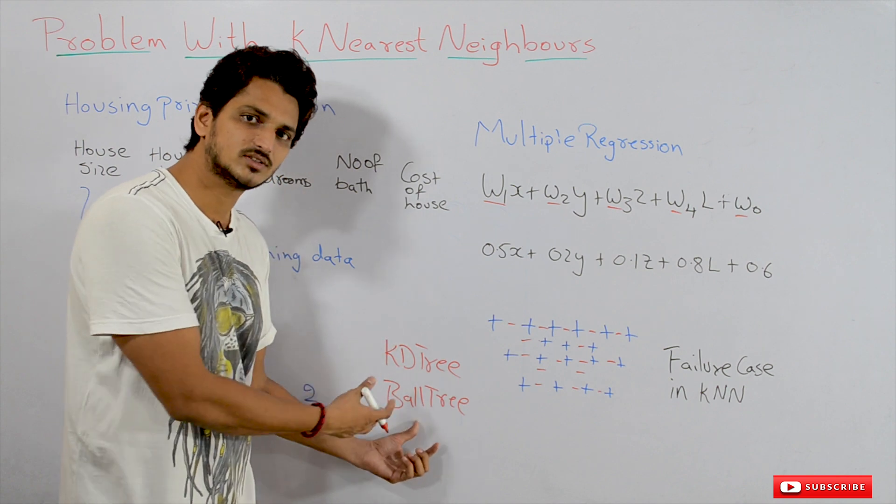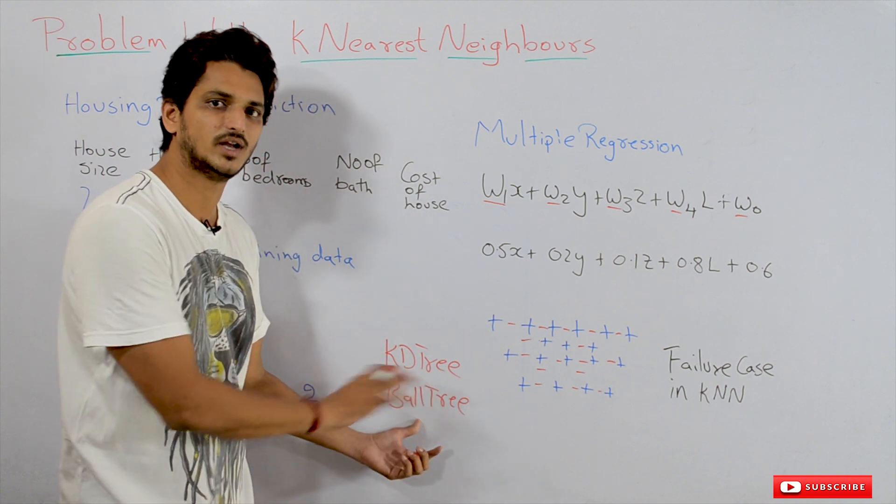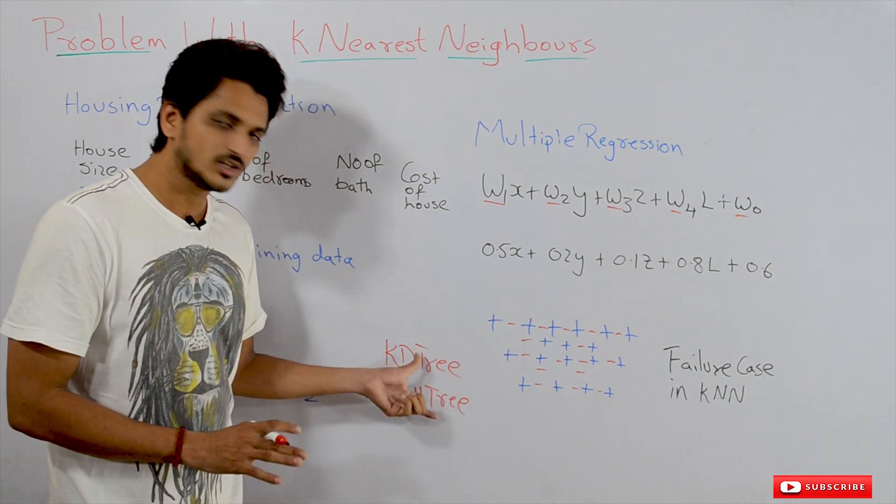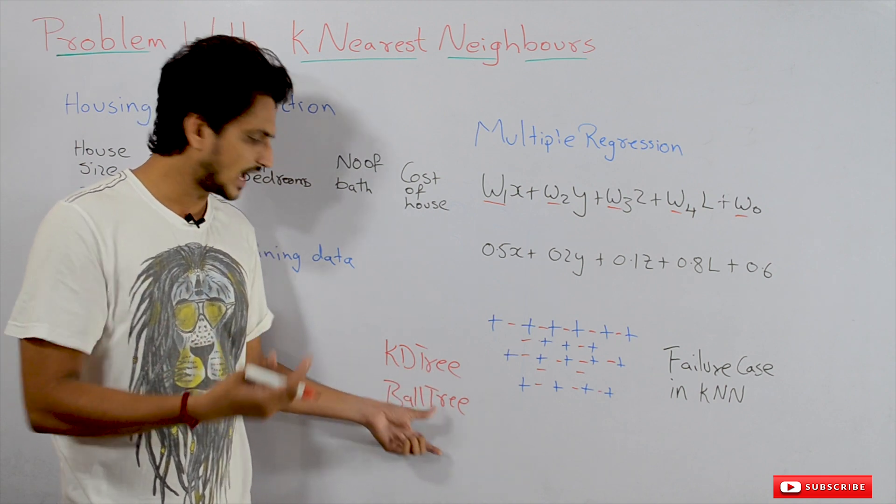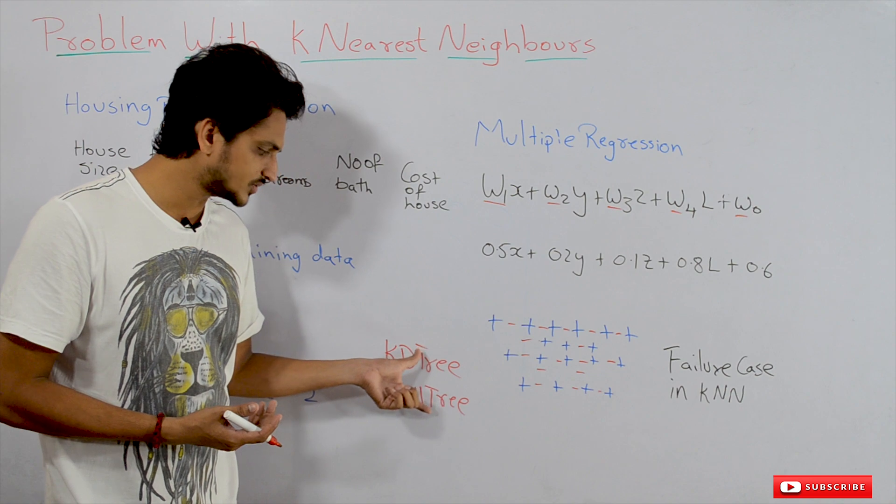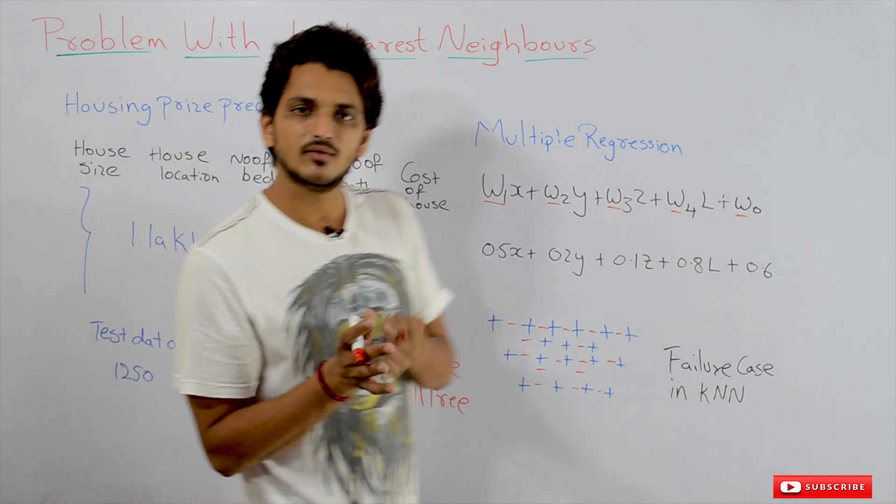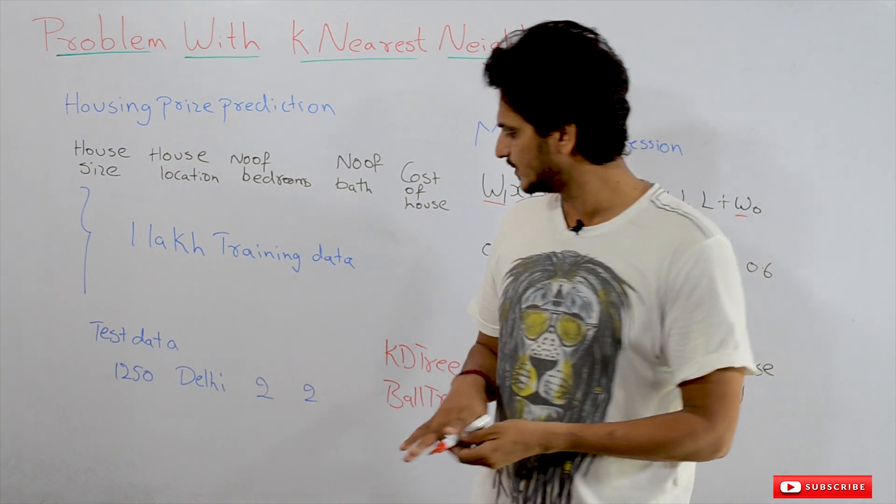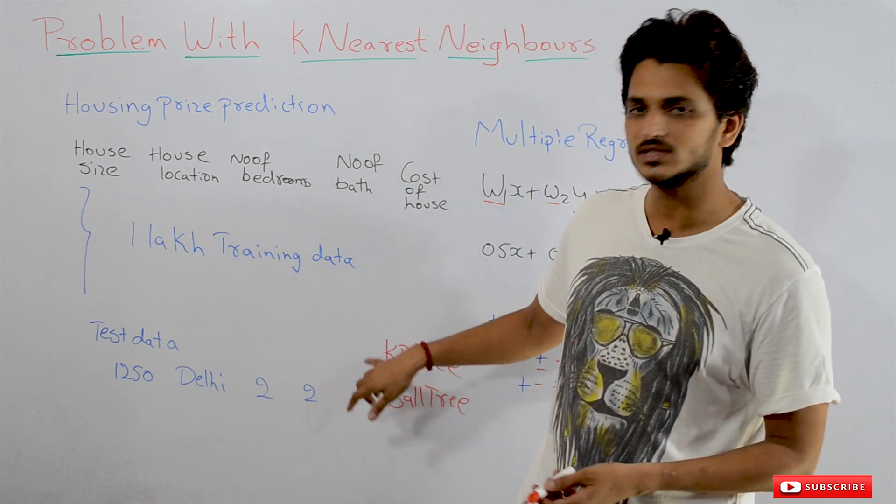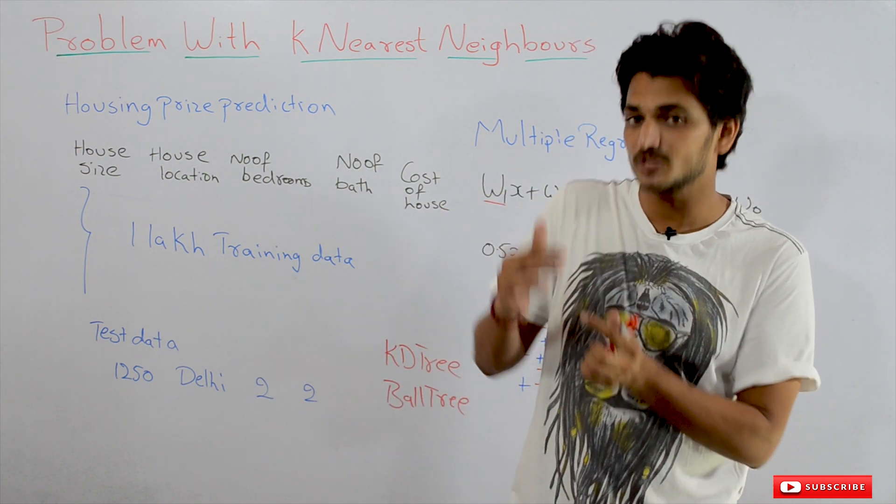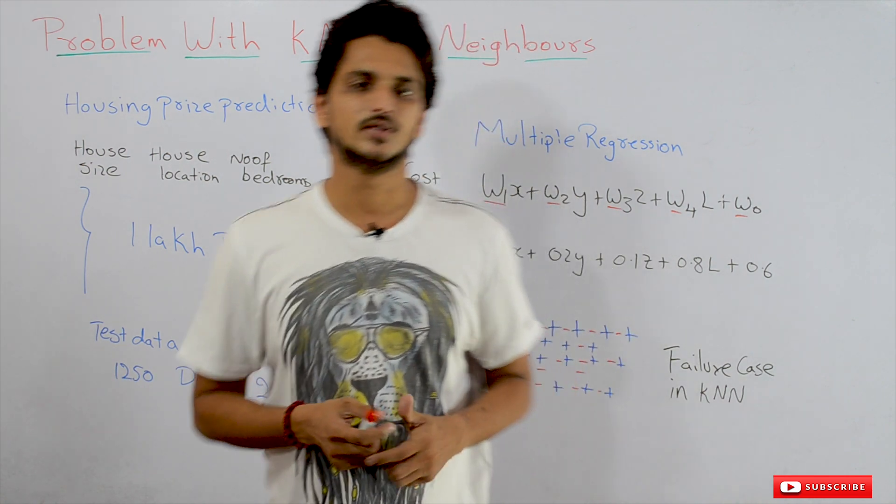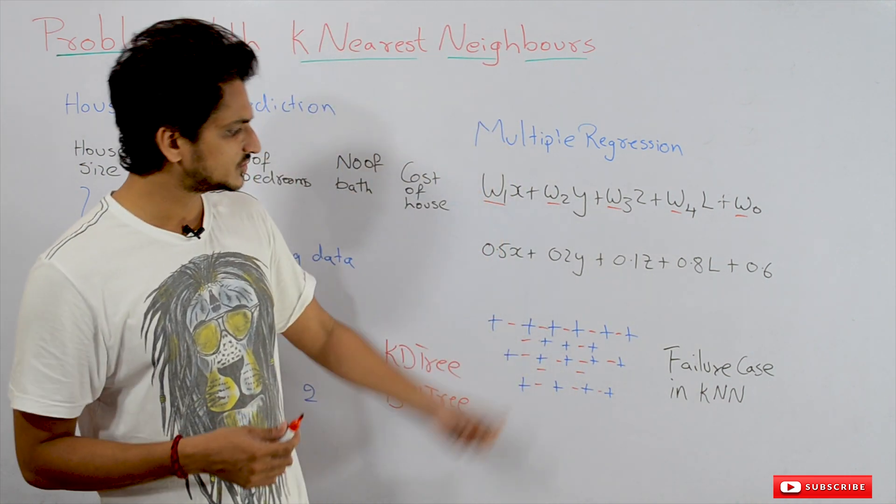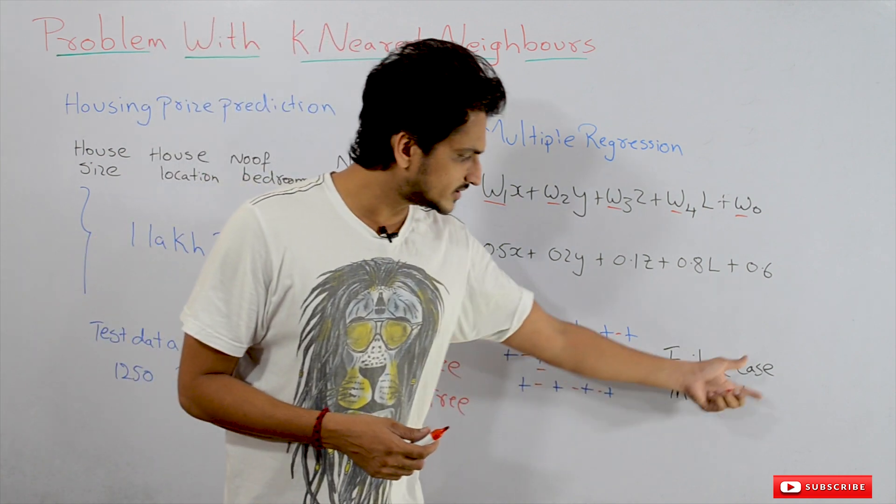The sklearn K-Nearest Classifier has this option. When you do the training, it will automatically generate this tree, which is helpful in reducing the computational cost during the testing phase. That's one problem with K-Nearest Neighbors. The next one is failure cases.